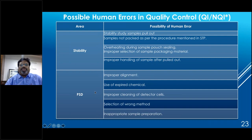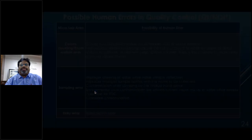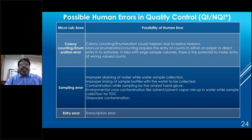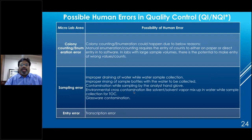Additional QC error areas: for particle size analysis — improper alignment, use of expired chemicals, improper cleaning of protective cells, and wrong method selection. For microbiological testing — colony counting errors, software entry errors, and water sampling errors including improper draining, improper rinsing of sample containers, contamination from gloves or environment, glassware contamination, and transcription errors.